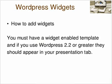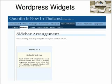How you add widgets is very simple. You must have a widgets-enabled template, and if you use WordPress 2.2 or greater they should appear in your presentation tab if your template supports them. This is what it looks like — simply click on presentation and you should see a widgets tab which you just click on and it will show you this page.